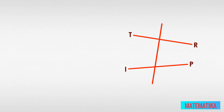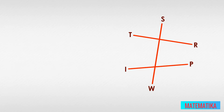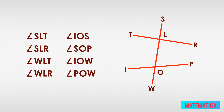Here are lines TR and IP, which would definitely cross somewhere in the distance. We cut across TR and IP with transversal SW, and where the transversal crosses TR and IP, we have points L and O. We can write each angle with three letters: angle SLT, angle SLR, and so on down to angle POW. We can also use numbers at these same vertices, so angle SLT is 1, angle SLR is 2, and so on.